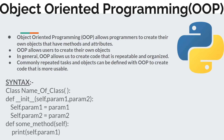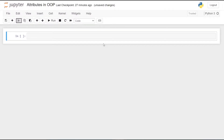Next we define another method called some_method, and here we use self which is related to the class. Then we are printing the attribute which is part of the object: self.param1. Now let's try some examples on attributes and object-oriented programming.